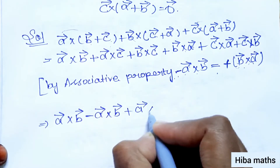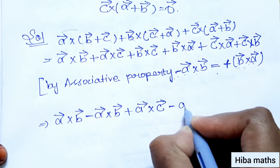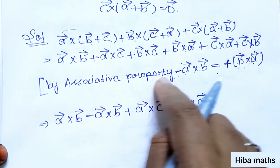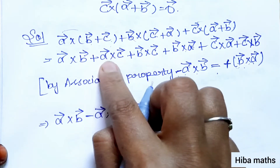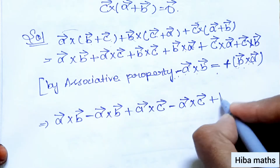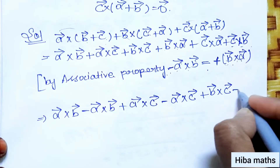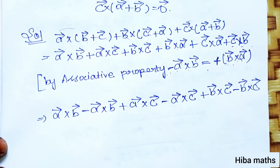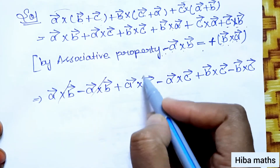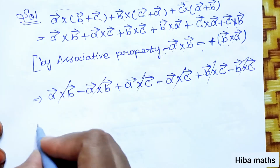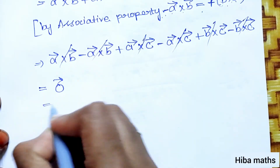Now, a vector cross c vector and c vector cross a vector are equal to minus a vector cross c vector. When we apply these substitutions, the terms become plus and minus pairs that cancel each other out — giving us zero vector, which is our RHS.